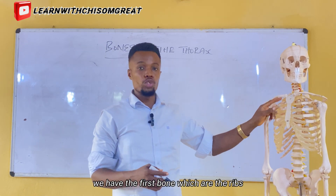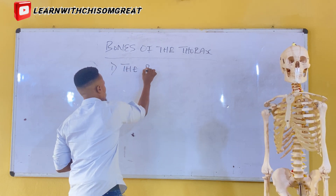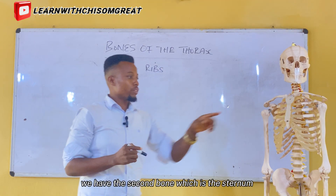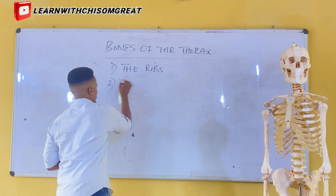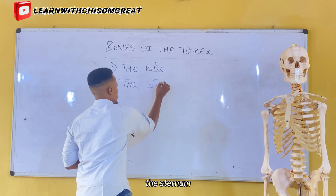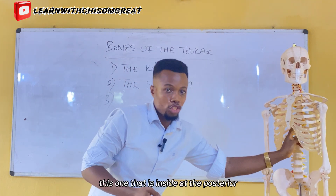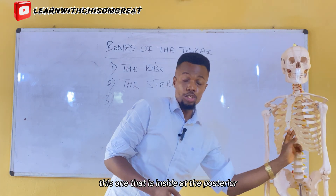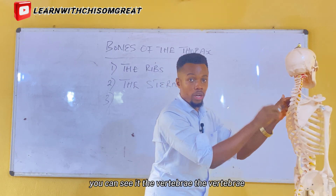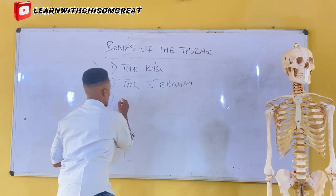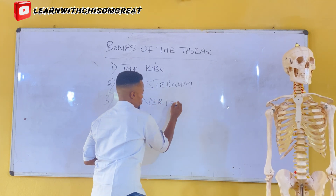We have the first bone, which are the ribs. We have the second bone, which is the sternum. And we have the third bone — this one at the posterior — the vertebrae.